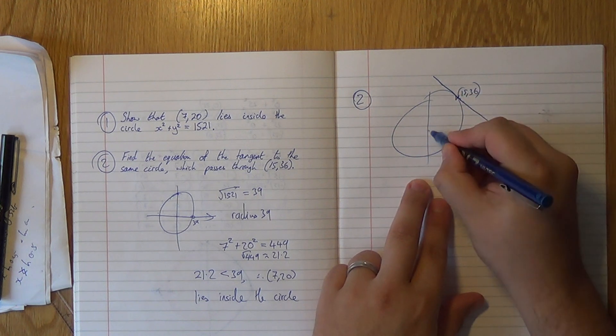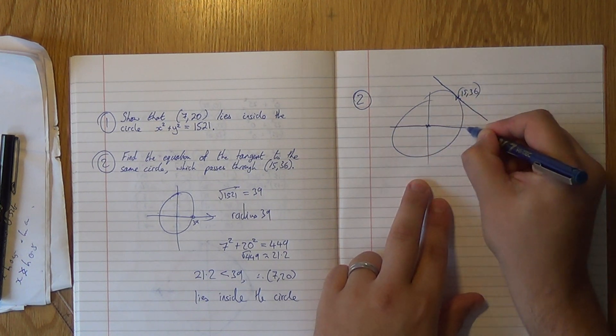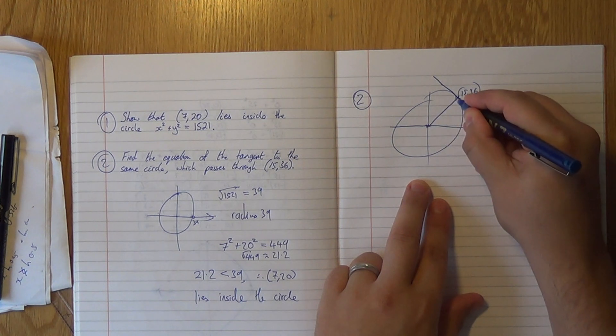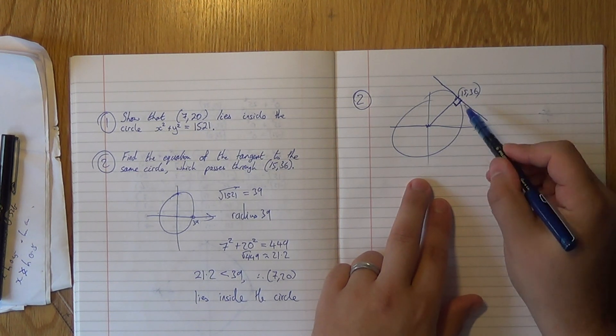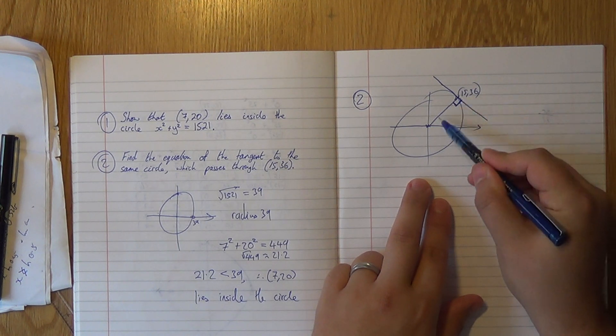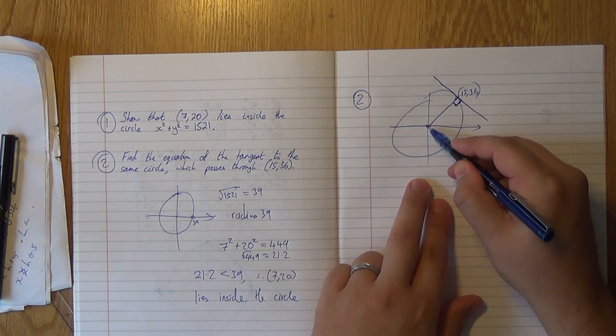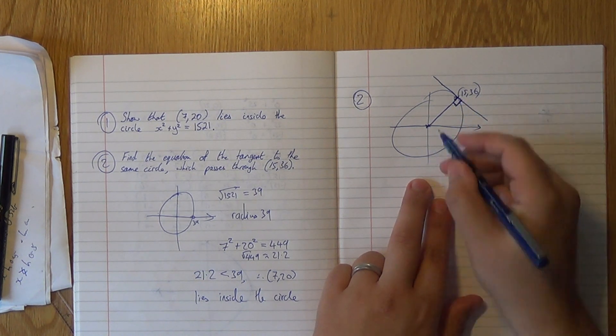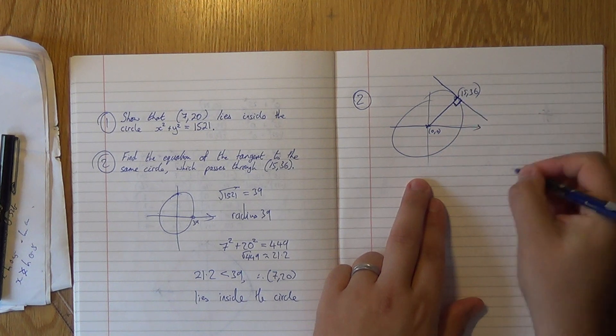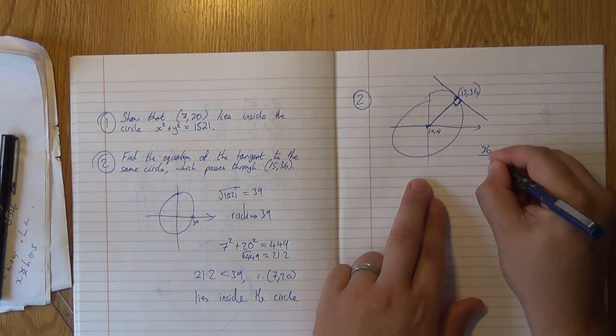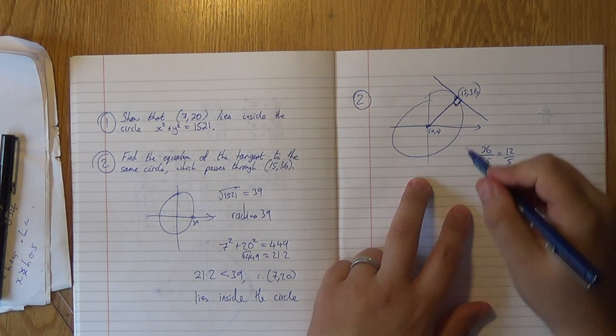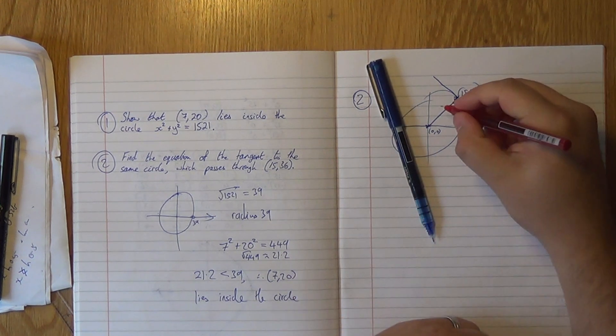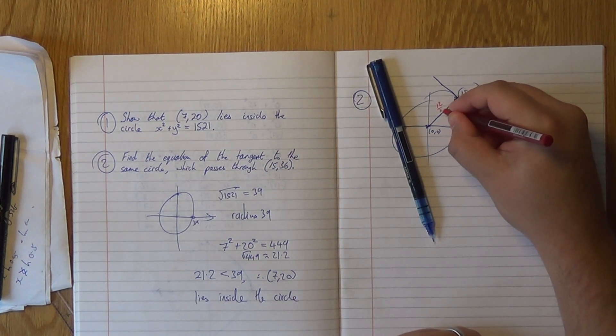But we know a property about this. We know that from the center of this circle, that radius there will meet at right angles. That's one of the key properties of a tangent to a circle. So we need to find a gradient we can use. Well, this gradient is easy because this line passes through (0,0). So the gradient of this line is just 36/15, which simplifies down to 12/5. So this line has a gradient of 12/5.